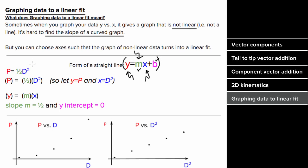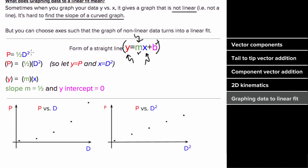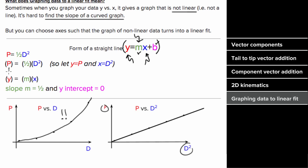For example, if you have the expression p equals one half d squared, and you just plot p versus d, you get a parabola, and finding the slope of a parabola is hard. But if you instead choose to plot p versus d squared, you get a straight line, because now p is your vertical axis and d squared is your horizontal axis.